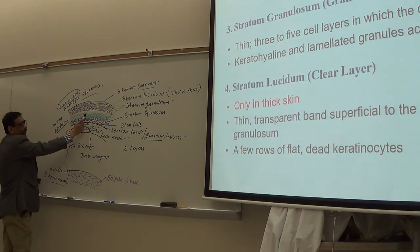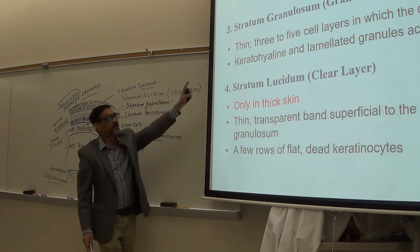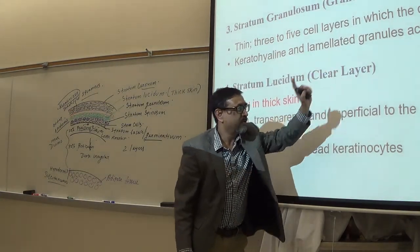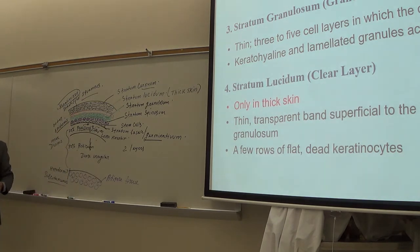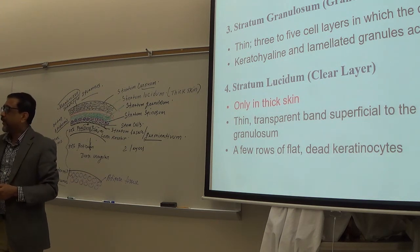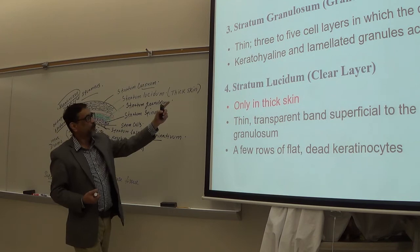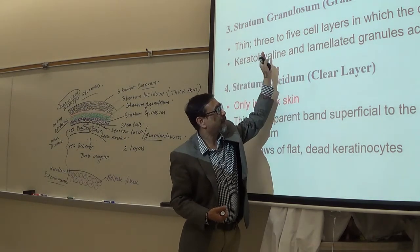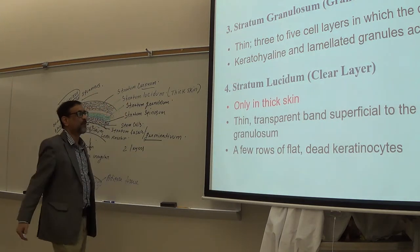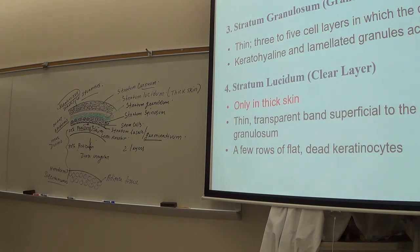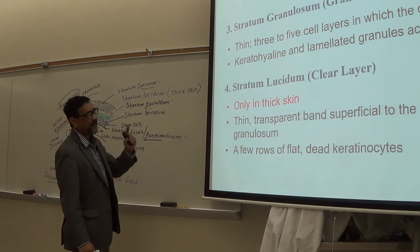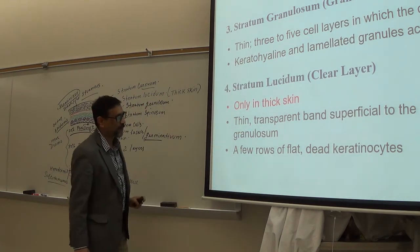In stratum granulosum there are two types of granules — keratohyaline and laminated granules. These granules have two important functions: they give the skin its durability, and they also prevent water from passing through, making the skin waterproof.